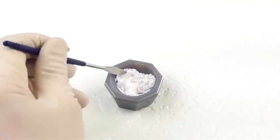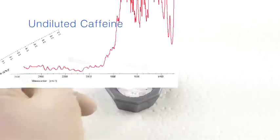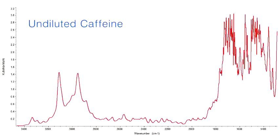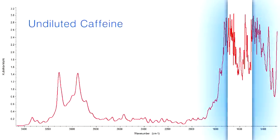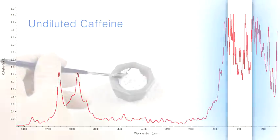Let's look at an undiluted spectrum of caffeine collected by diffuse reflectance. Poor spectral quality is observed, especially in the fingerprint region between 1700 to 1500 wavenumber.